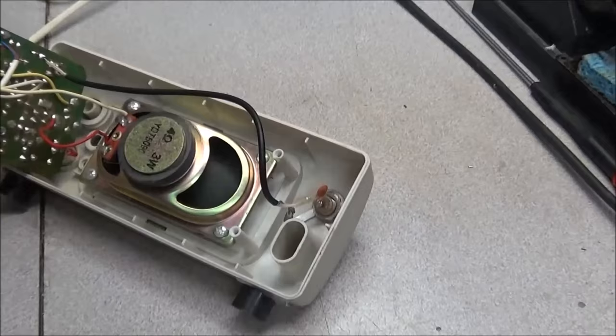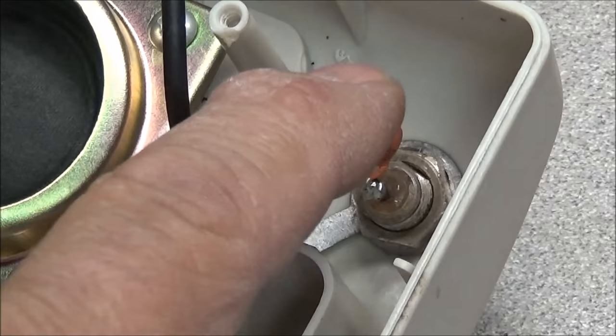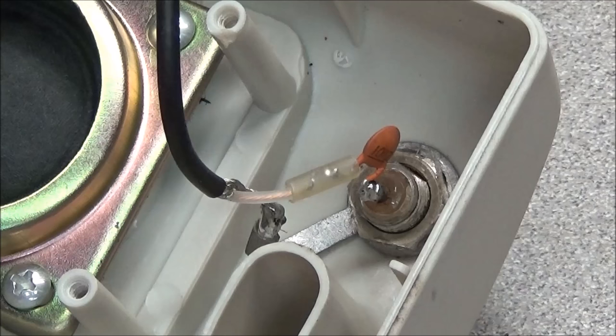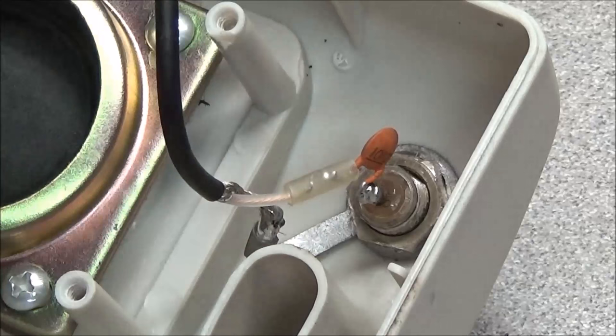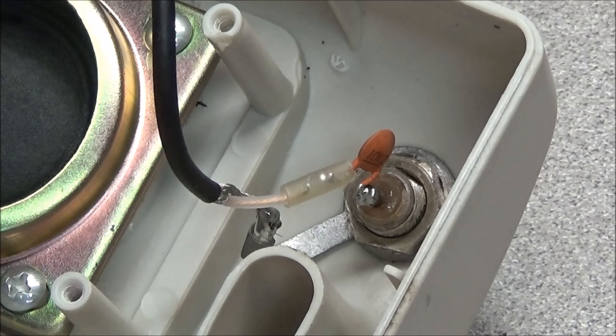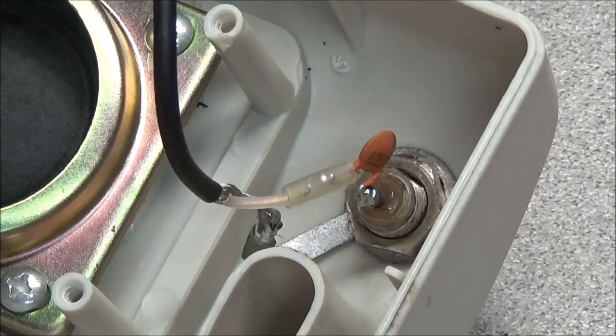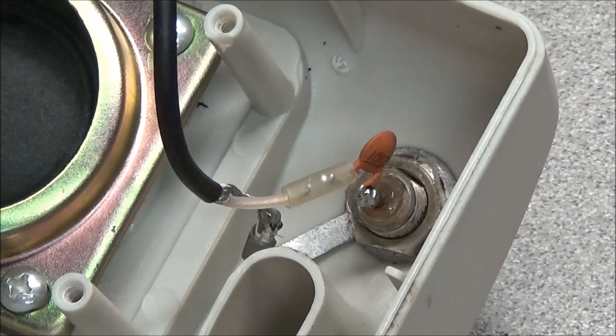It comes over to a BNC jack and what you want to do is put a 0.1 microfarad capacitor in series with your center pin on your BNC jack. What this does is block any DC current from going in and destroying your amplifiers. You don't want DC current to go in, you only want to pass AC signals and that's what your capacitor will do.